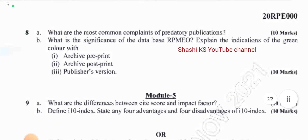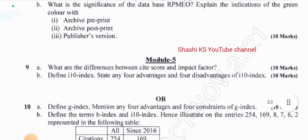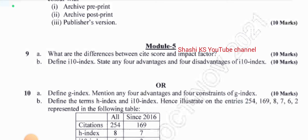In Module 5: what are the differences between CiteScore and impact factor, asked for 10 marks. Define I10 index and state any 4 advantages and 4 disadvantages of I10 index, for 10 marks. The or-choice was: define G index and mention any 4 advantages and 4 constraints of G index, for 10 marks. Also, explain the terms H index and I10 index, and illustrate on the entries 254, 169, 8, 7, 6, 2 represented in the following table.